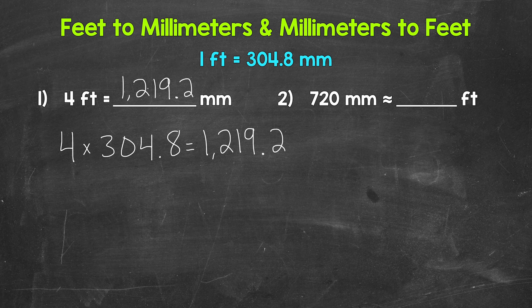So again, when going from feet to millimeters, we multiply by 304.8. Let's move on to number two, where we have 720 millimeters is approximately how many feet. And we have that approximately sign there because we're going to end up rounding.